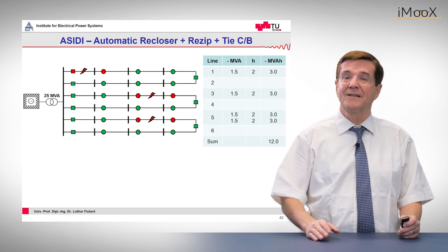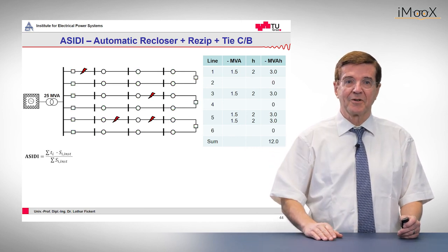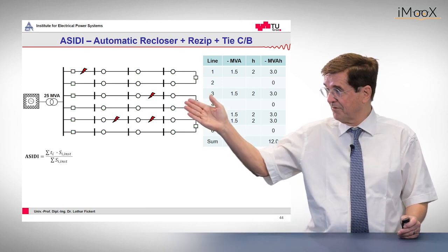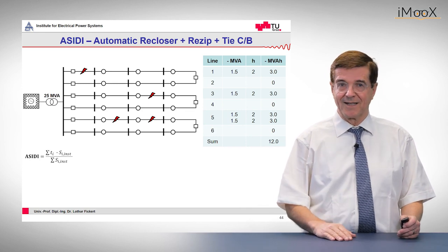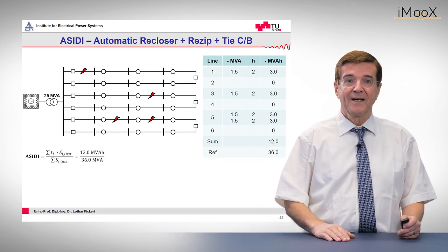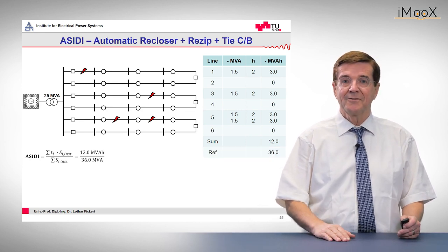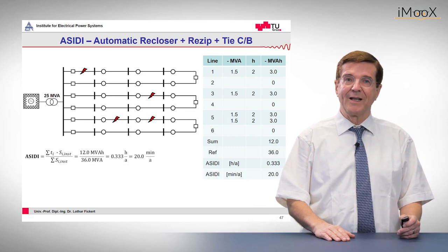Again we repeat this process of determining the ASIDI figure, which is the weighted sum of the outages, and here we arrive finally at a time of 20 minutes per year.